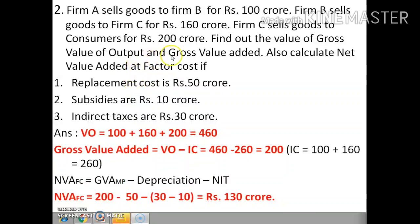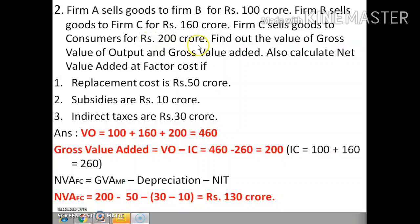We need to find three aggregates: gross value of output, gross value added, and net value added at factor cost. First, value of output (VO). Gross value of output is the total sales of all producers. Here we have three producers — Firm A, Firm B, and Firm C. Total value of output = 100 + 160 + 200 = ₹460 crore.